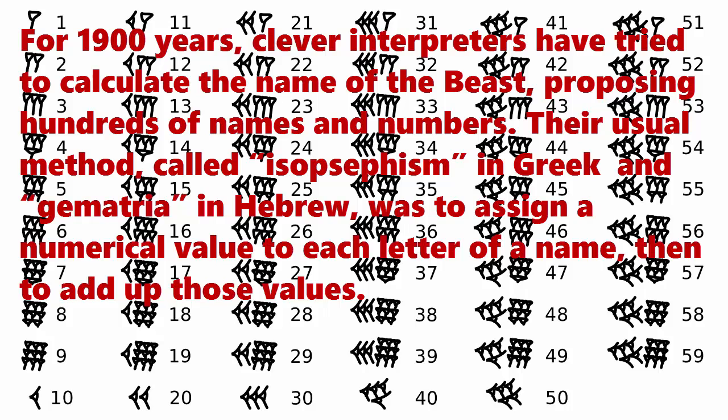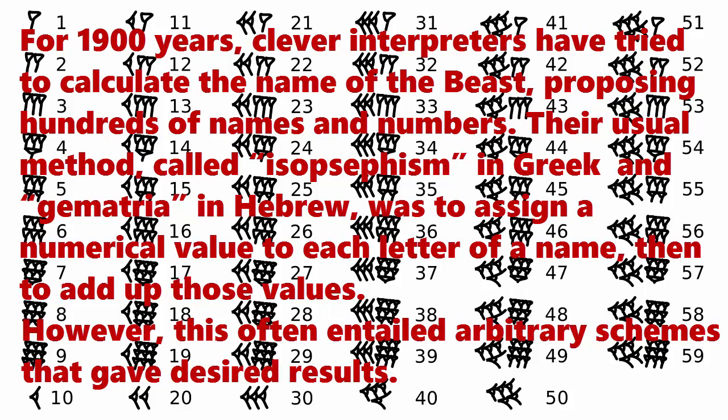For 1,900 years, clever interpreters have tried to calculate the name of the beast, proposing hundreds of names and numbers. Their usual method — called isopsyphism in Greek and gematria in Hebrew — was to assign a numerical value to each letter of a name, then add up those values. However, this often entailed arbitrary schemes that gave desired results.